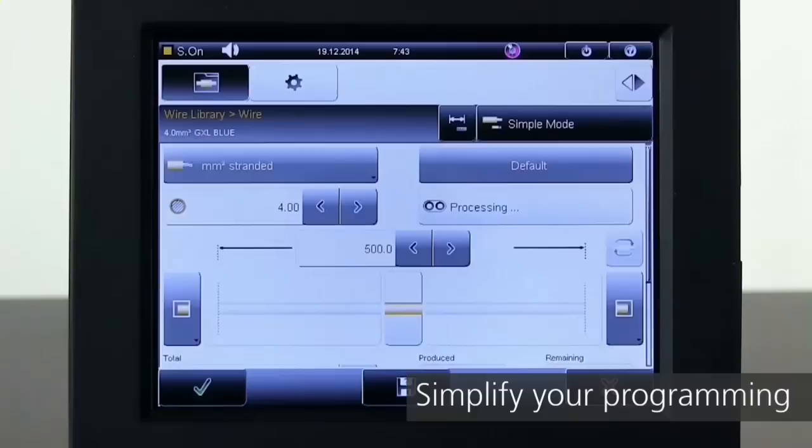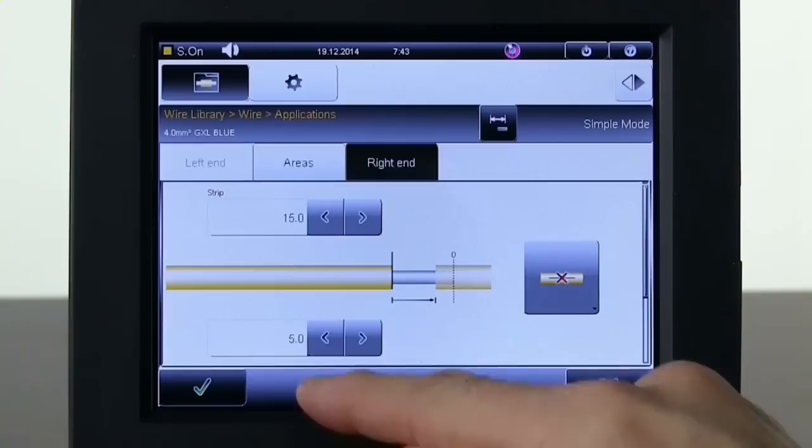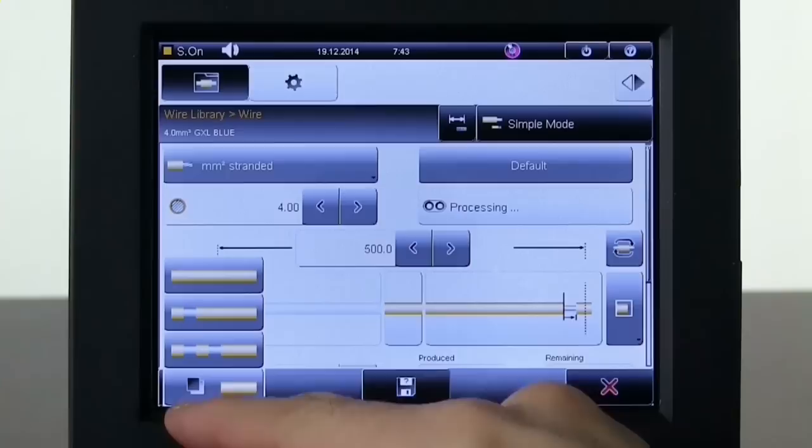Programming the Multistrip 9480 is simple. Standard software includes raw material and freely programmable processing libraries for quick setup and easy changeover.